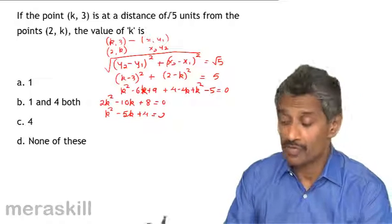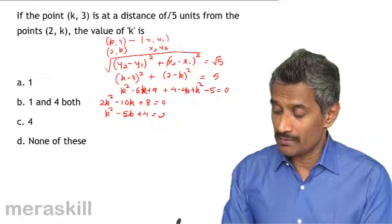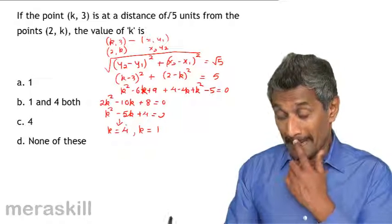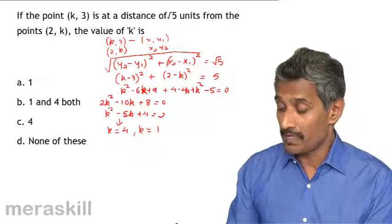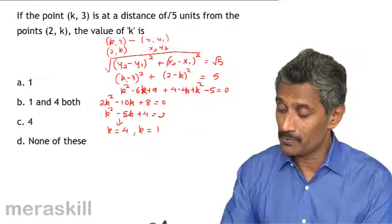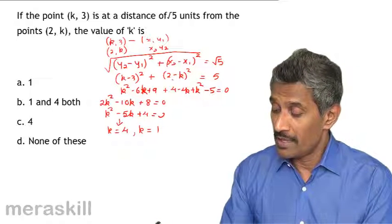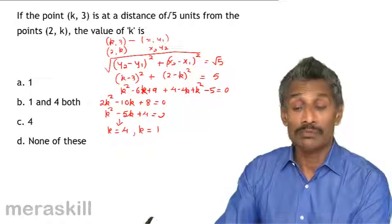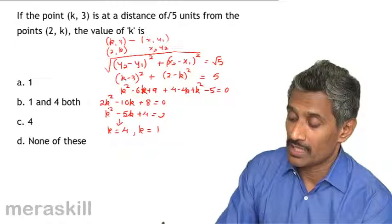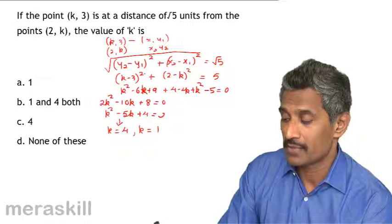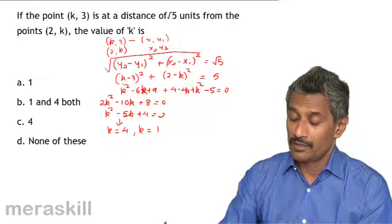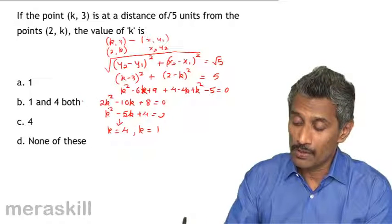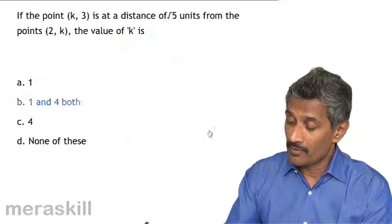Factoring k² - 5k + 4 = 0, we get k = 4 and k = 1. We can verify: if k = 4, then (4-3)² + (2-4)² = 1 + 4 = 5 and √5 ✓. If k = 1, then (1-3)² + (2-1)² = 4 + 1 = 5 and √5 ✓. So k can be either 1 or 4, and the answer is both 1 and 4.